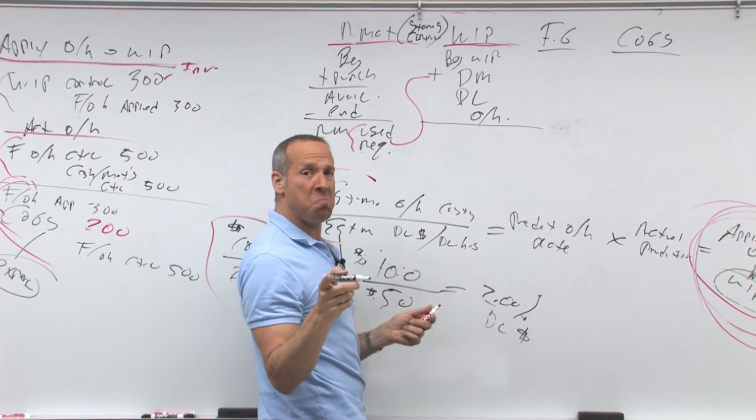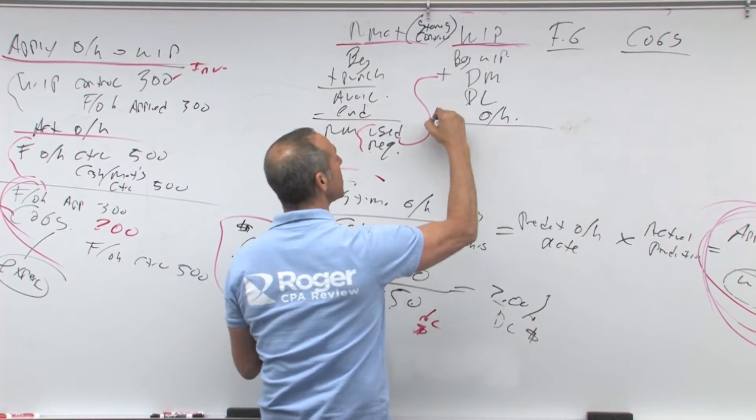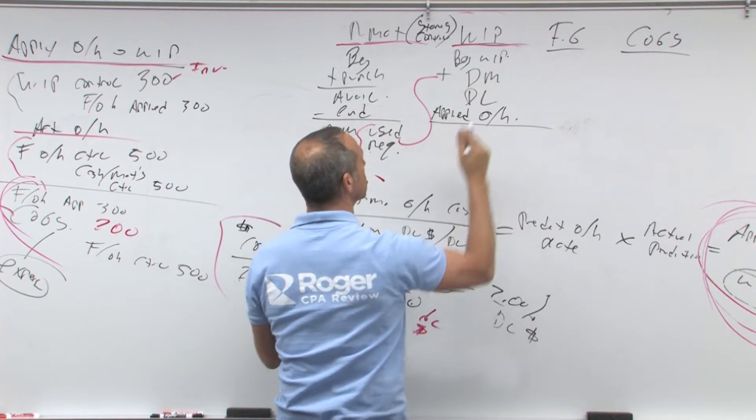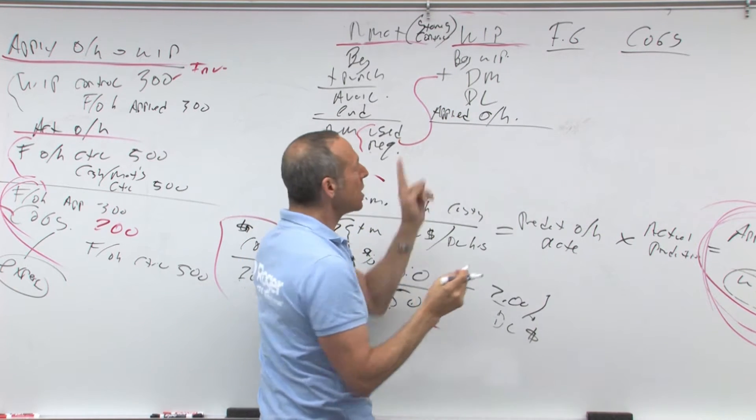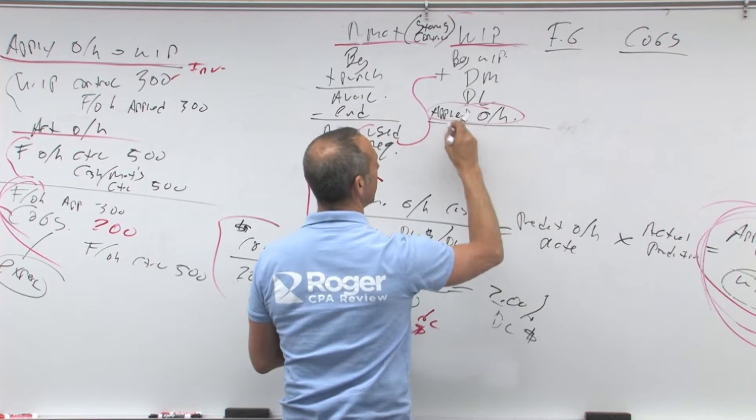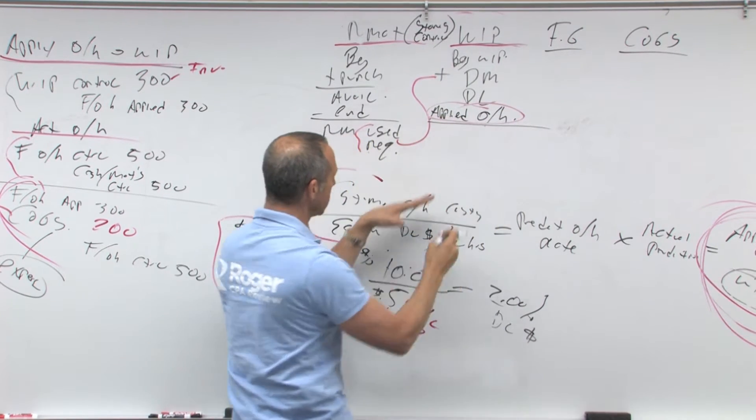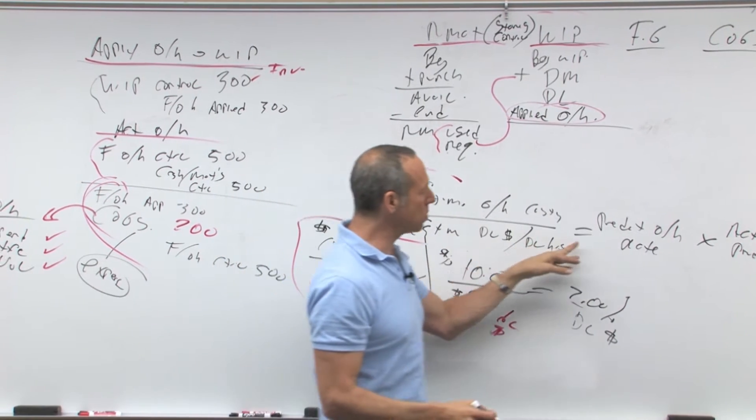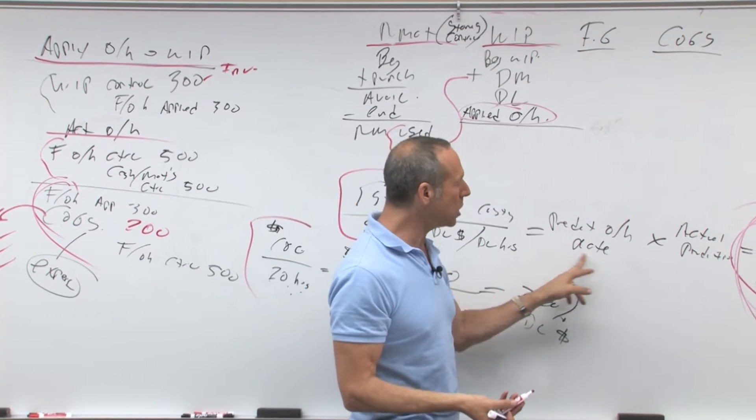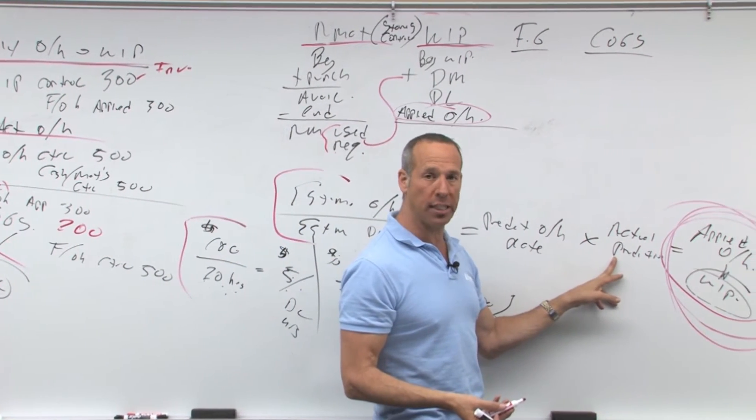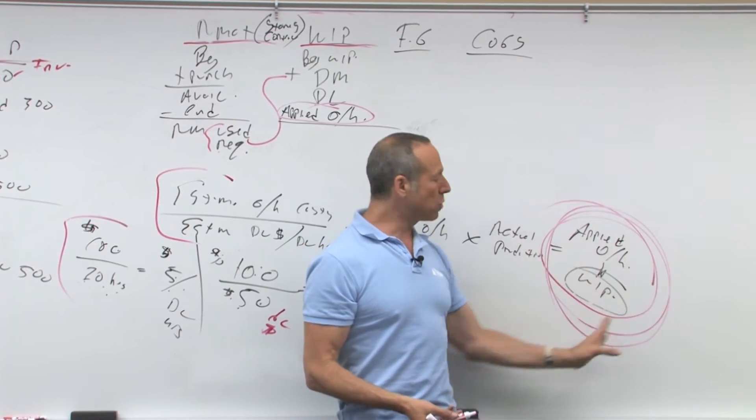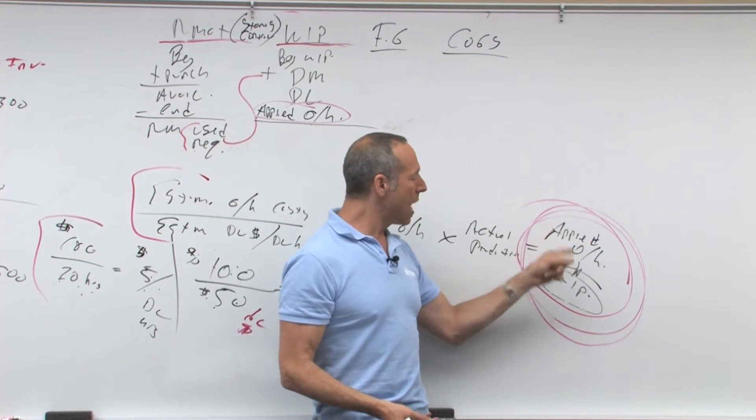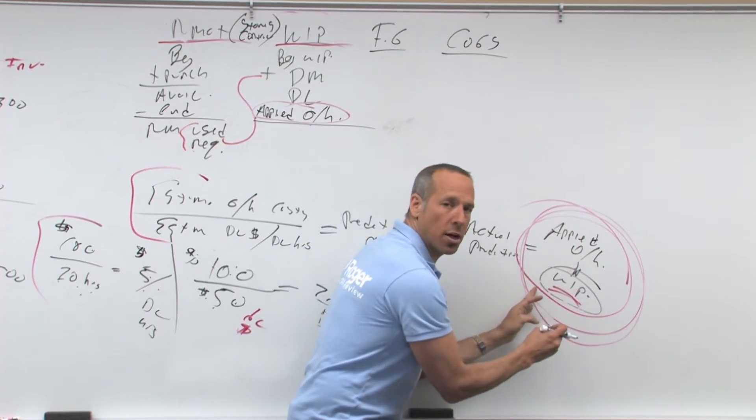What kind of overhead anybody? Applied overhead. Because we don't know how much actual is yet. It's applied. Now, remember this is applied overhead. How did we get this? We took our estimated cost over estimated dollars equals a predetermined rate per whatever times actual production equals what? Equals your actual overhead. So, you can see here your actual overhead, that goes into where? Work in process.